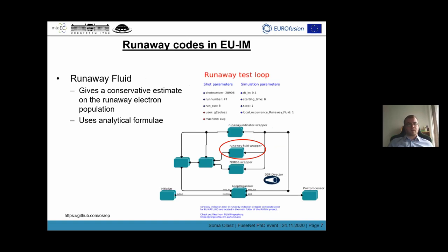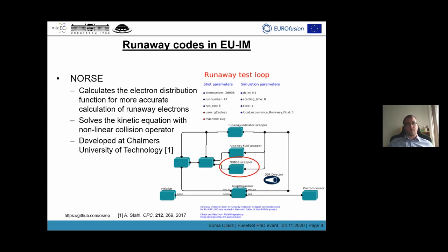If runaway generation conditions are met, the runaway fluid can be used to give a conservative estimate about the runaway electron population. Runaway fluid uses analytical formulae to calculate the Dreicer and avalanche generation rates. It calculates the runaway density and the contribution of the plasma current from runaway electrons. If a more accurate calculation is required, then the NORTH kinetic code can be used.